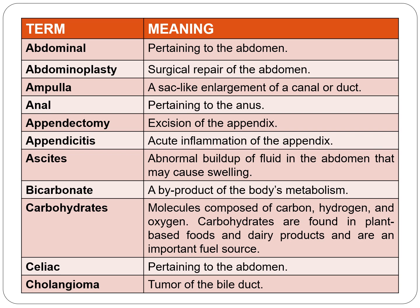Ascites is an abnormal buildup of fluid in the abdomen that may cause swelling. Next is bicarbonate — it is a byproduct of the body's metabolism. Next are carbohydrates — these molecules are composed of carbon, hydrogen, and oxygen. Carbohydrates are found in plant-based foods and dairy products and are an important fuel source.